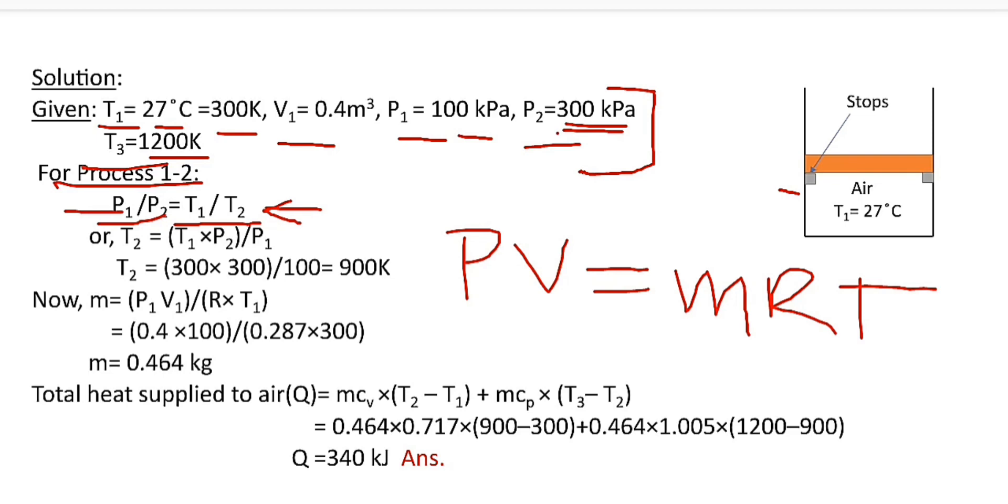From this relation, T2 is equal to T1 times P2 divided by P1. The value of T1 is 300, the value of P2 is 300, and P1 is 100. So the value of T2 is equal to 900 K.